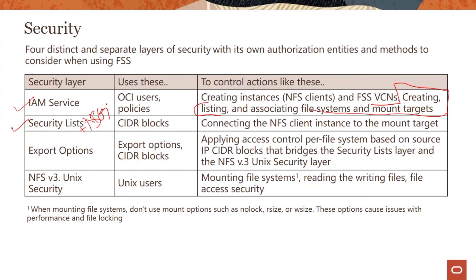There's also something called export options, which applies access control per file system based on source IP CIDR blocks. It bridges the security list layer and the NFS UNIX security layer, giving you an additional security layer you can leverage. And finally, you could leverage NFS UNIX security. When you mount your file system and read and write files, you have different options. As a caveat, when mounting a file system, don't use mount options such as nolock, rsize, or wsize — these options can cause issues with file locking and performance. So there are four distinct layers: Identity Access Management, security lists and network security groups, export options, and NFS UNIX security.